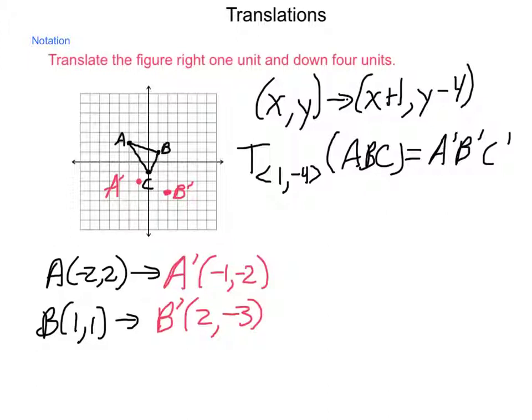Last, as we look at C, which is located at (0, -1), what we're going to end up with through this transformation is C prime, which will be located at (1, -5). And that would put it right here on the graph. And then connecting it to make the triangle gives us our triangle A prime, B prime, and C prime.